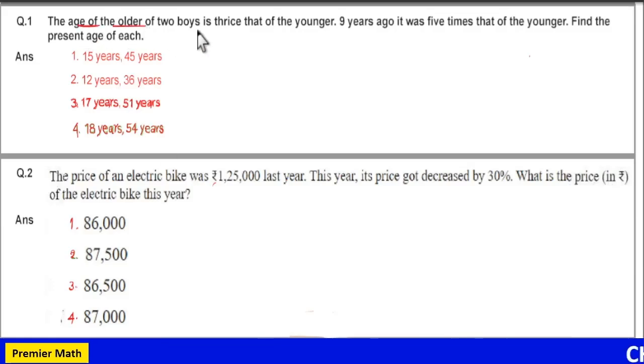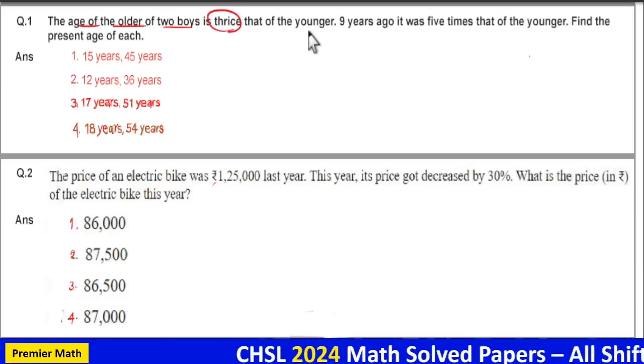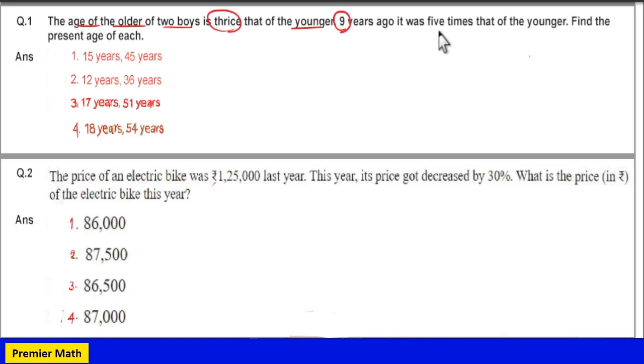The age of the older of two boys is thrice that of the younger, and 9 years ago it was 5 times that of the younger. Find the present age of each.